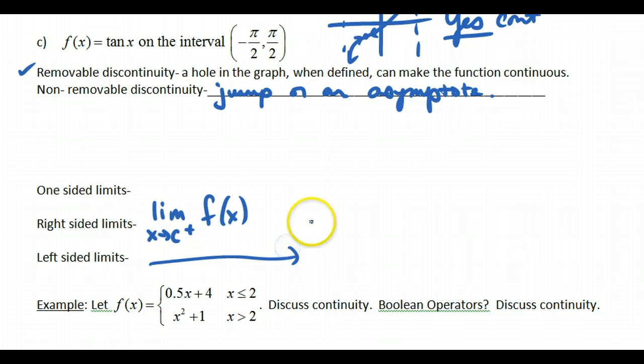And if we want to do left-sided limits, we can do the limit as x approaches c from the left of f of x. And so this is the right-sided limit. This is the left-sided limit. The negative is after the value. It's a little confusing if your c value is, for instance, negative 2.